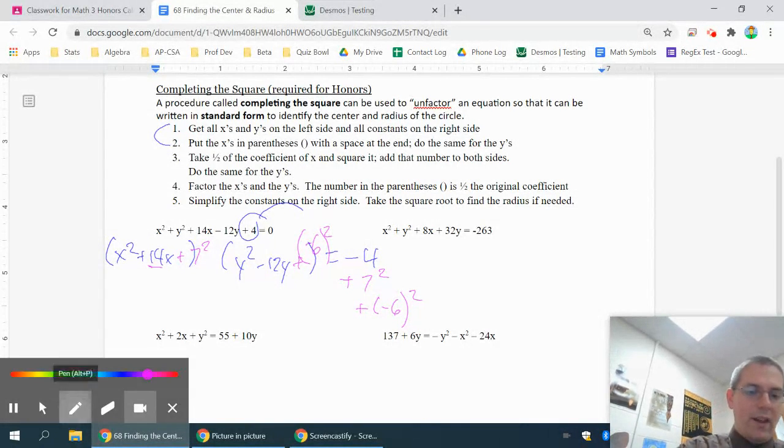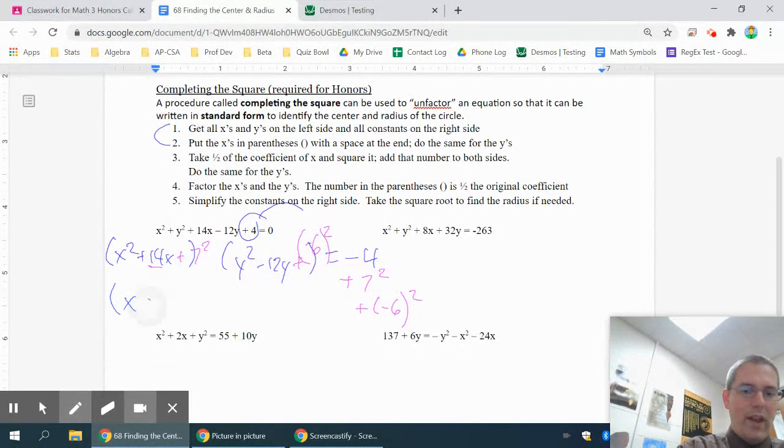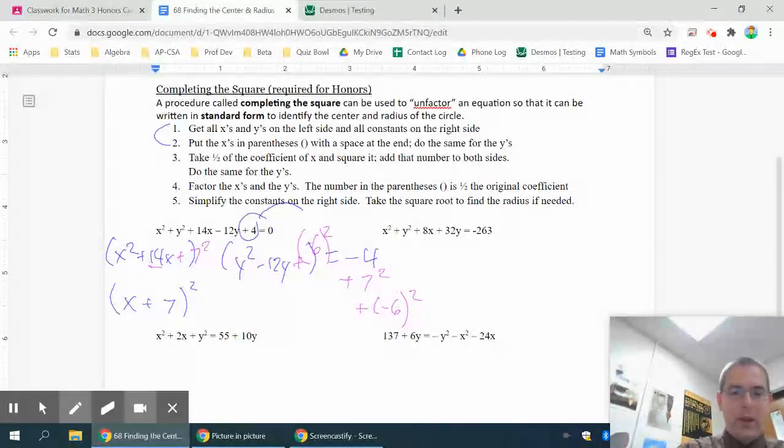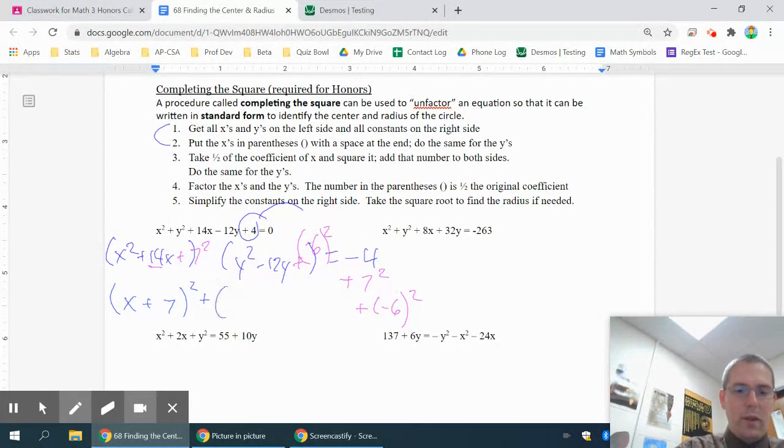Now what we're going to do is we're going to factor the x's and y's. So when I factor those, it's always going to factor as x plus 7. Just bringing down whatever number I added in squared is going to be how it factors. And then that's going to be a plus y minus 6. Bringing that down. And then on the other side, you're going to have to do a little bit of simplifying.